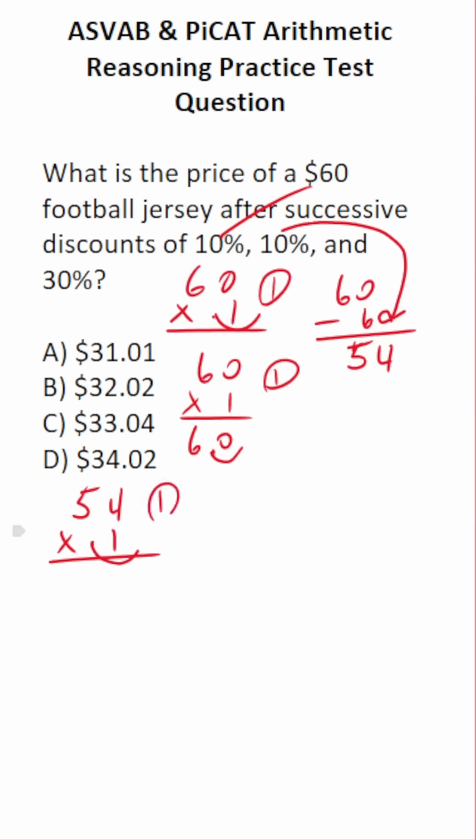Move this decimal one place to the right to make this 54 times 1, albeit with one decimal to move back in. This is going to be 54. Move that decimal one place back to the left. So this becomes 54 minus 5.4. We're going to have to add a decimal here and a 0 here.